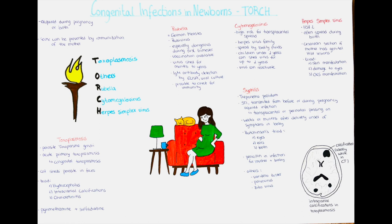Diagnosis of rubella: it is possible to check for antibodies, specifically IgM antibody detection with the ELISA method. It is also possible to do a viral culture. Women who wish to become pregnant can test and confirm their immunity towards rubella by checking their IgG status.